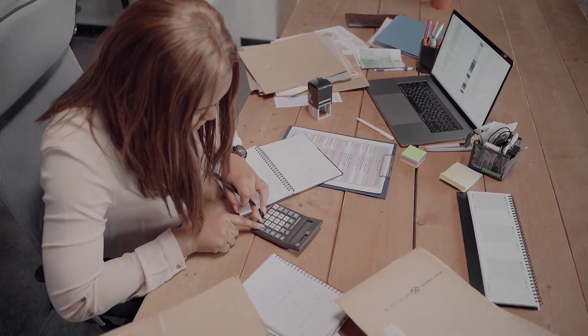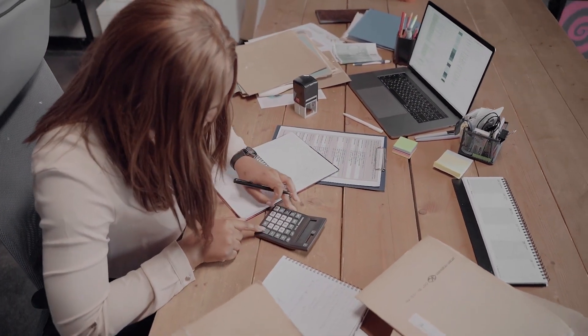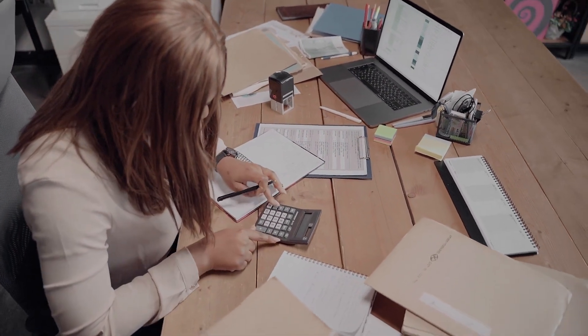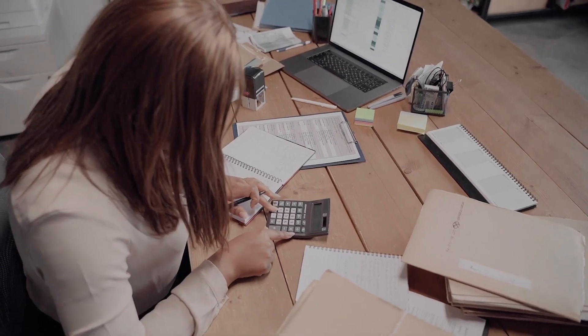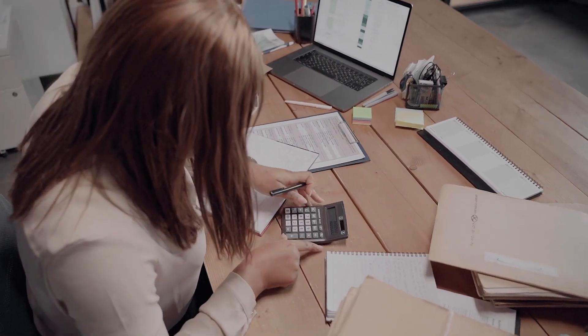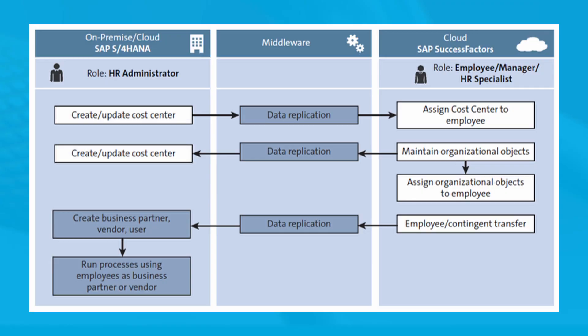These scenarios are very similar to those used when integrating Employee Central with SAP ERP. The following figure shows the data flows between Employee Central and SAP S4 HANA. All packaged integrations for SAP S4 HANA are only available on cloud integration — they are not available on BuMI.